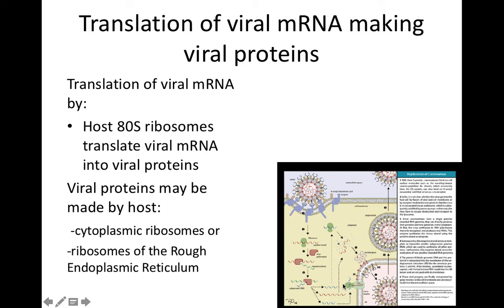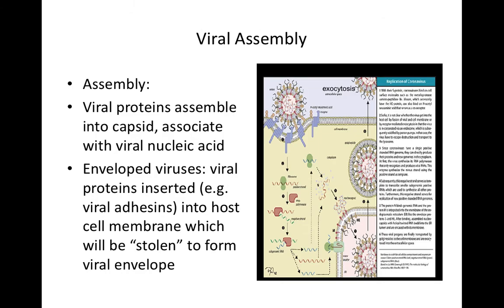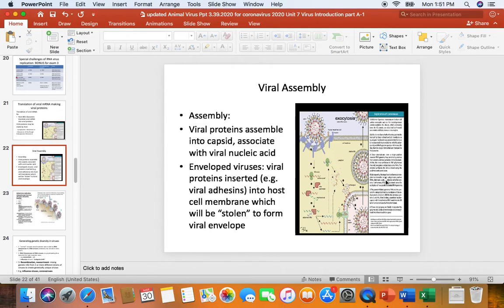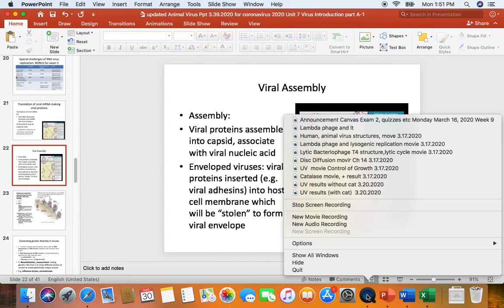The coronavirus buds, stealing the endoplasmic reticulum as its envelope. Through exocytosis, the viruses are carried in a membrane-bound vesicle to the cytoplasmic membrane. The vesicle then fuses with the cell membrane, releasing the coronavirus to the outside. We'll stop this audio here and then finish the replication cycle looking at viral assembly.